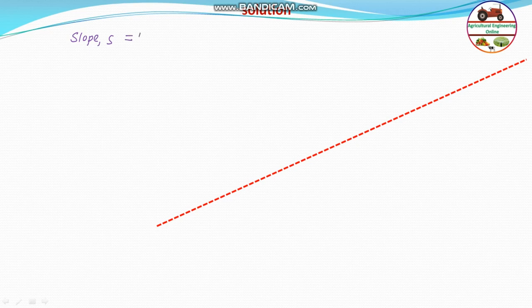First of all, this is an Eastern Himalayan region having a slope of 16%. So, the slope S in percentage is 16%, or in fraction that is 0.16, which is nothing but vertical interval divided by horizontal interval. Let us see what is the vertical interval and horizontal interval in this terrain.